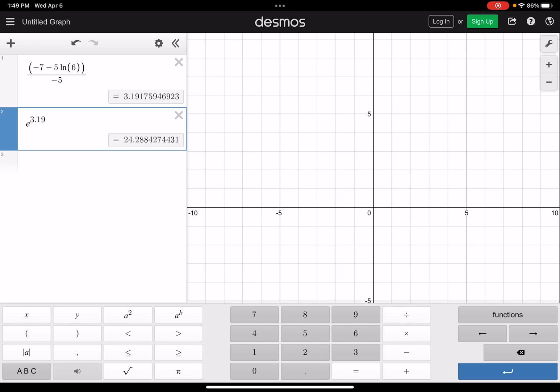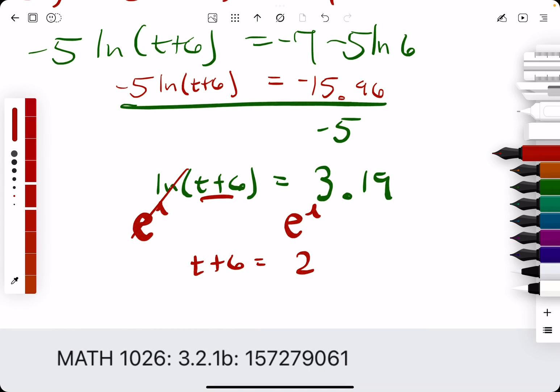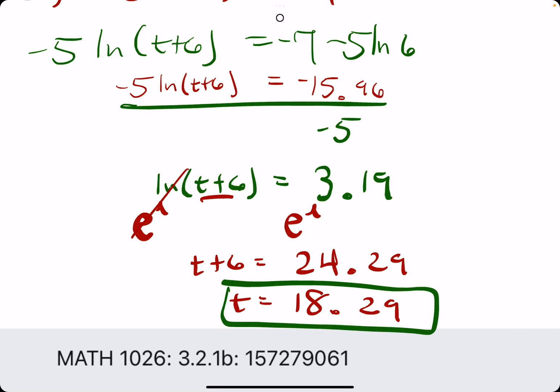We have 24.29. Then to get t by itself, we subtract by six, giving us 18.29.